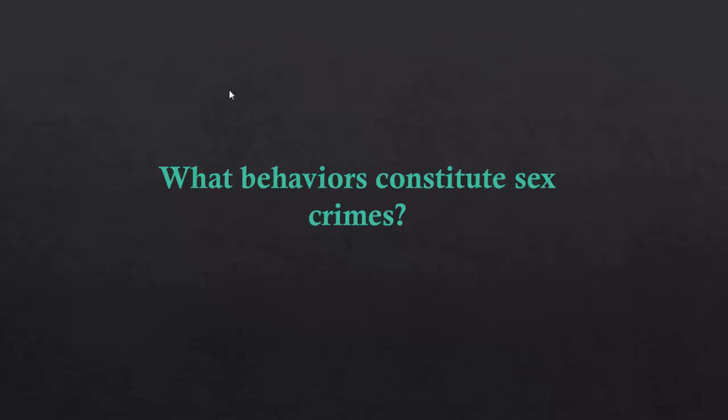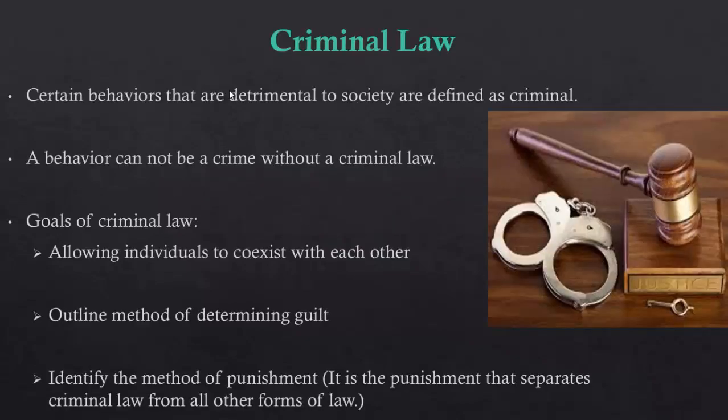As we move out of historical and biblical connotations of what constitutes a sex crime, we now have to talk about more modern approaches. We have to ask ourselves what behaviors currently constitute sex crimes in the United States and all around the world. Before we can get into a fundamental discussion of what constitutes a sex crime, we really need to take a look at what constitutes criminal action in a general sense. So let's look at what criminal law is from a fundamental level and discuss the elements that need to be in place in order for a behavior to be considered outlawed.